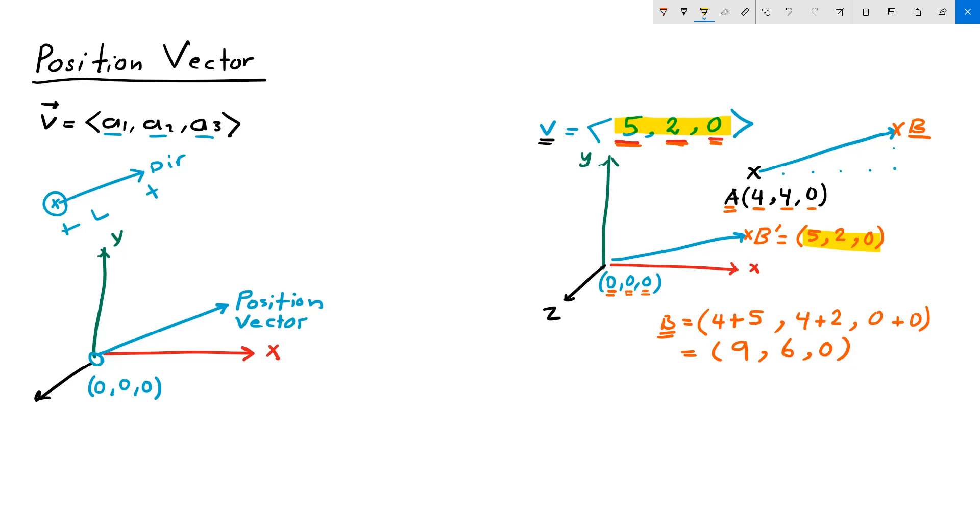Notice that b dash is not the same as v. b dash is a point, it's the tip point of the position vector v. And there is a big difference between points and vectors, but sometimes they get confused. So let's take a moment to see the difference between vectors and points.